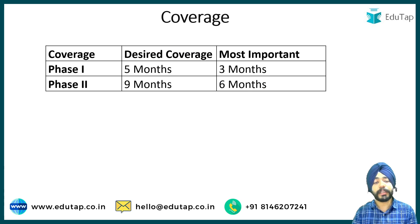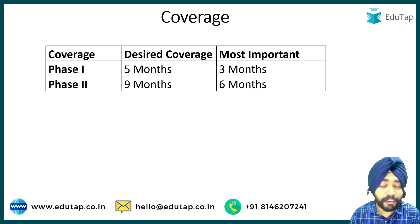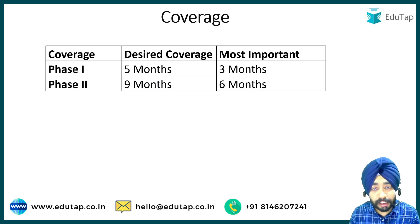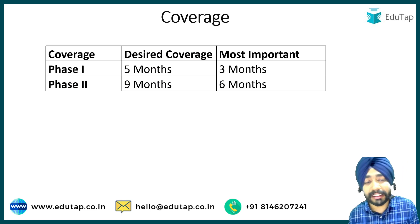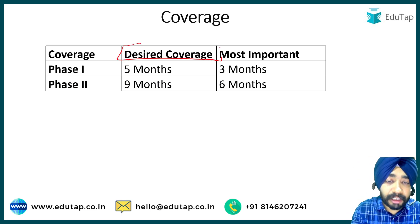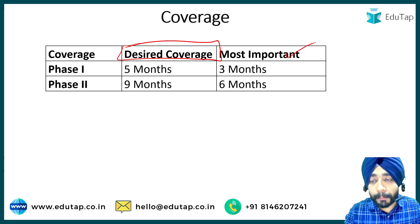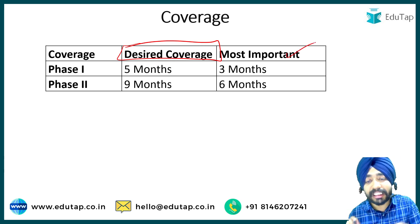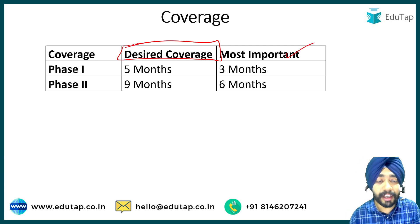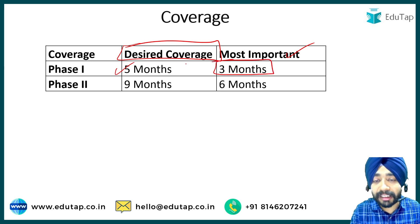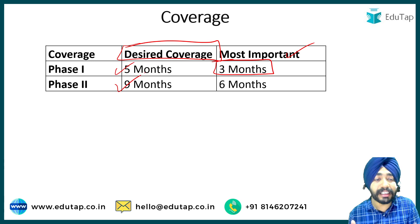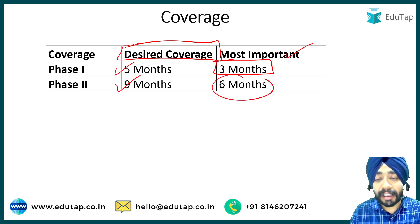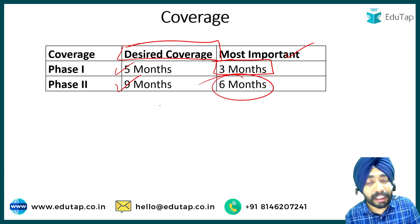Now comes the coverage perspective. For Phase 1 and Phase 2 I have divided coverage into two important things: desired coverage and minimum important coverage. For Phase 1, the desired coverage will be five months before your examination, but the last three months are the most important. Similarly for Phase 2, nine months is the desired coverage, but the last six months you have to cover very well.